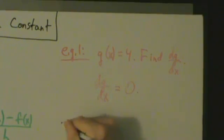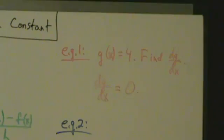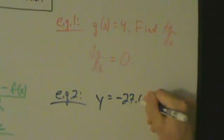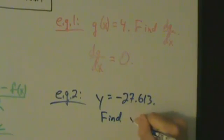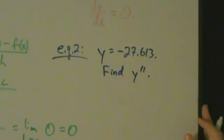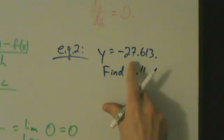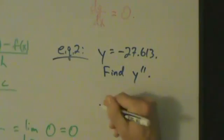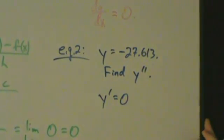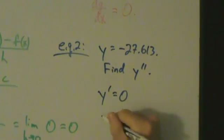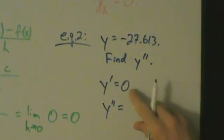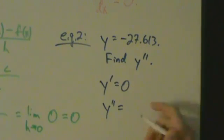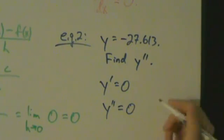Let's check out example 2. So let's say we have y equals negative 27.613, and we want to find y double primed. Okay, well here y equals negative 27.613, so it's just a constant, right? So that means that the derivative of y is going to be 0, okay? But we want the second derivative. Well, what's the second derivative? Well, remember the second derivative is just the derivative of the first derivative, right? But the first derivative is 0. 0 is just a constant, so its derivative is also 0. So that's our answer for example 2.